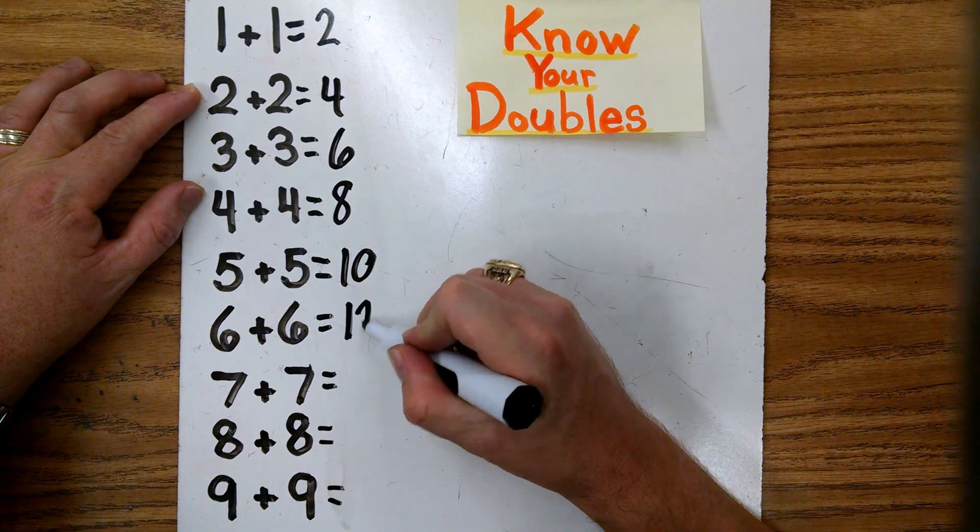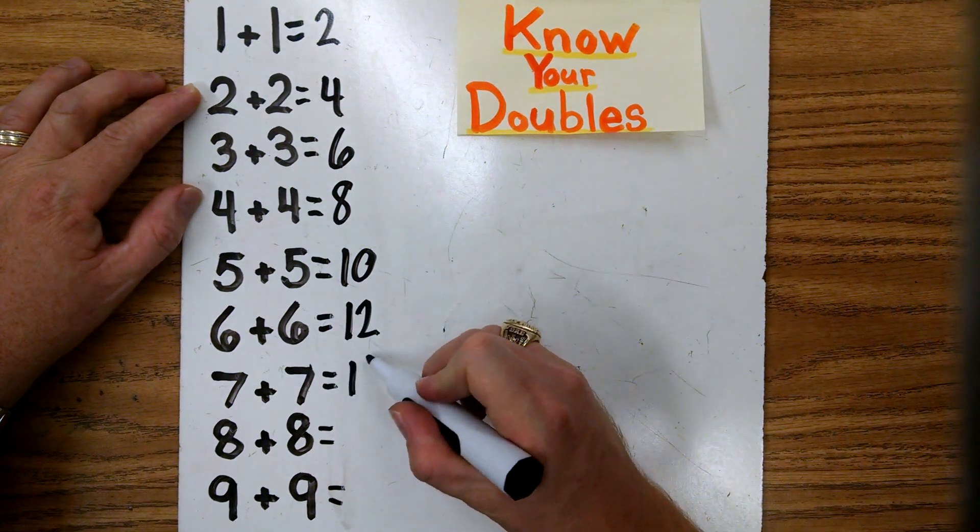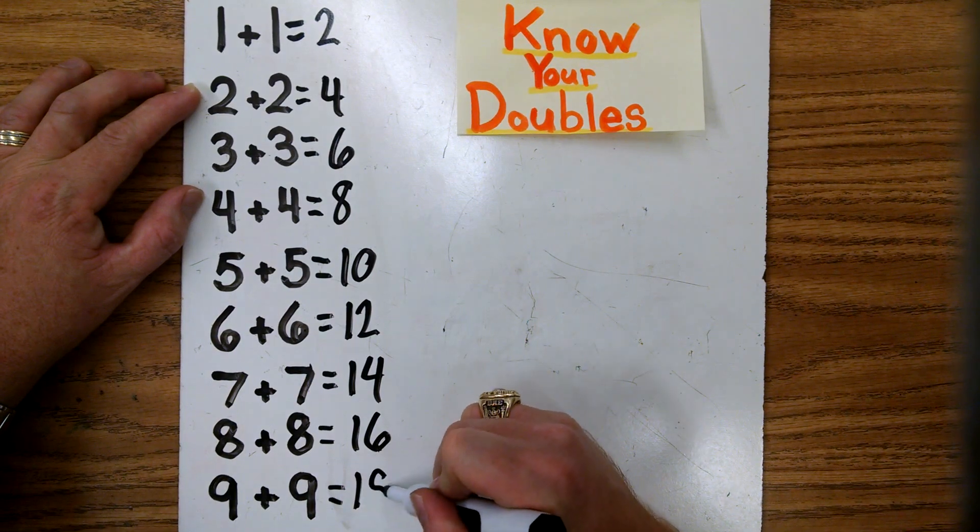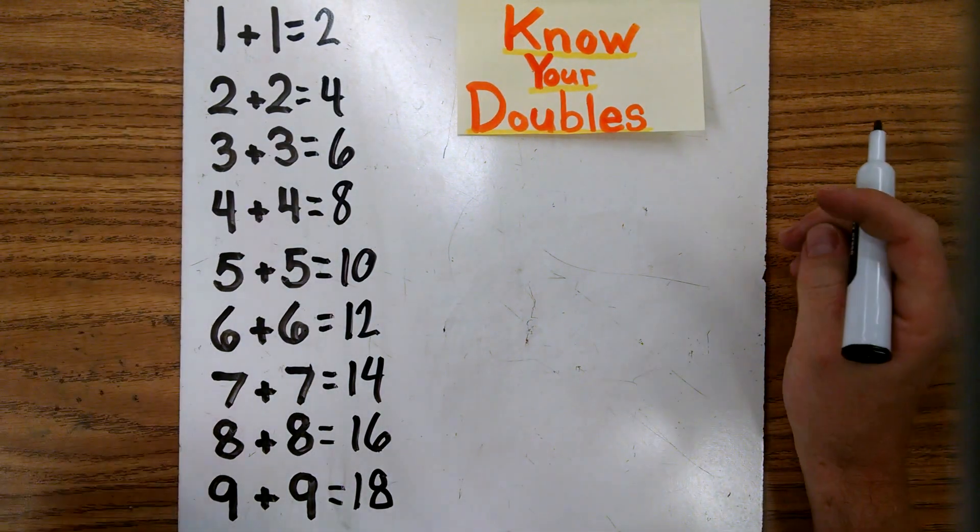6 plus 6 is 12. 7 plus 7 is 14. 8 plus 8 is 16. And 9 plus 9 is 18. And then 10 plus 10 would be 20.